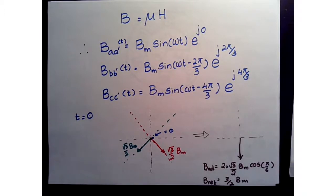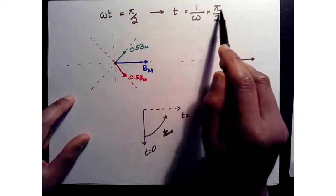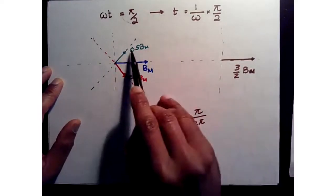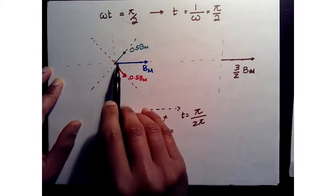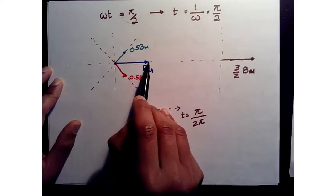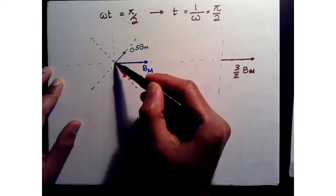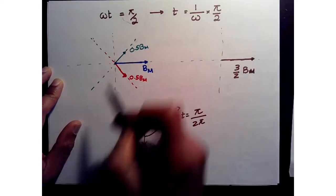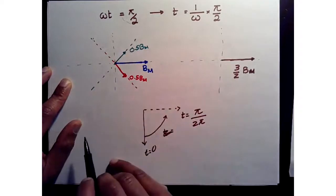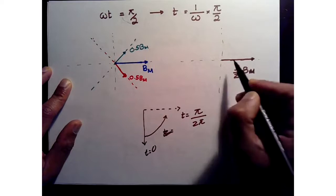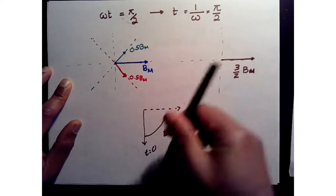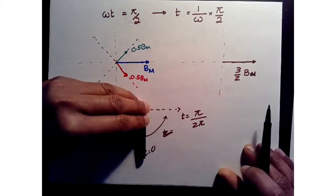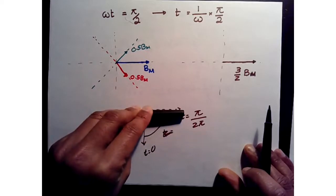Now let's advance time to t = (1/ω)·(π/2), so ωt = π/2. In this case we get three vectors: the AA-prime vector is along the zero-degree axis with no angular variation, BB-prime is in its direction, and CC-prime changes direction due to the sign change — it's now in the positive direction. When we take the vectorial sum we again get 1.5Bm, but now it's pointing in a different direction than at t = 0.